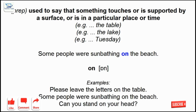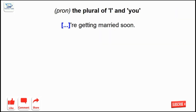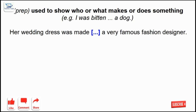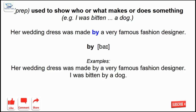On: used to say something touches or is supported by a surface, or is in a particular place or time. We: the plural of I and you. By: used to show who or what makes or does something.